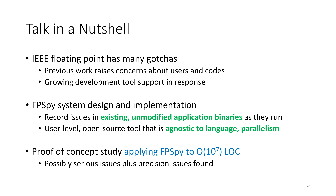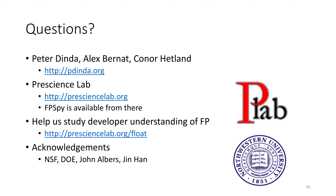To summarize, the IEEE floating point standard has a lot of gotchas. I've shown you a tool, FPSpy, which tries to capture the effects of those gotchas. It's different from existing tools because its goal is to target existing unmodified application binaries and to be agnostic to language, parallelism, etc. I showed you a proof-of-concept study where we applied FPSpy to very large-scale codes. FPSpy is available from our website. If there are any questions, I would be happy to take them. Thank you.